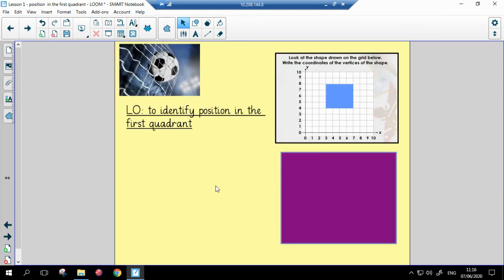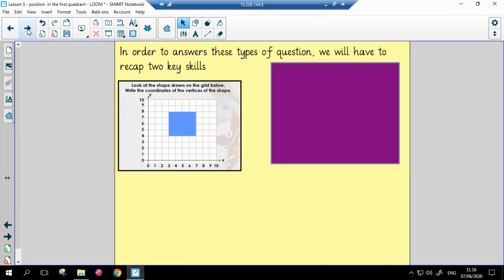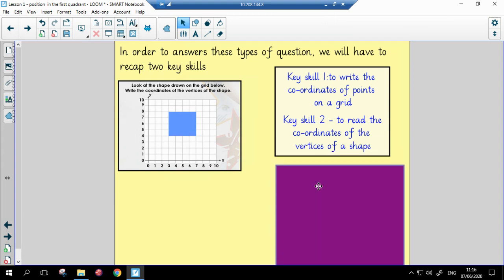As I said, we are looking at position and direction now, and our learning objective for today is to identify position in the first quadrant, and that's so we can answer questions that look like this. To be able to answer these sorts of questions, we have to recap two key skills. Our key skill one is to write the coordinates of points on a grid, and key skill two is to read the coordinates of the vertices of a shape.